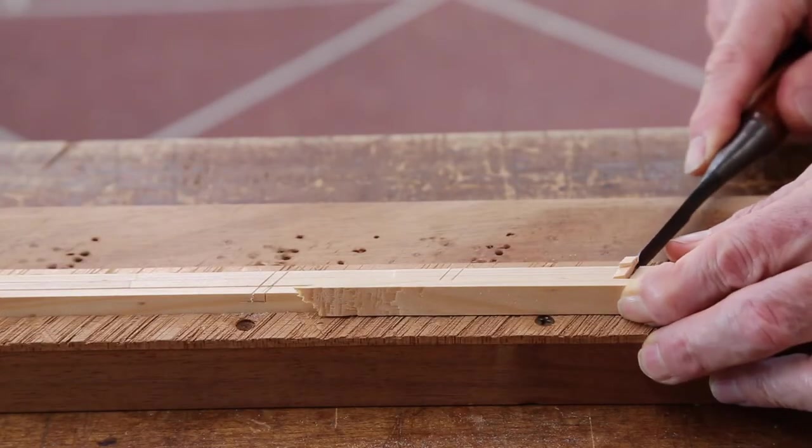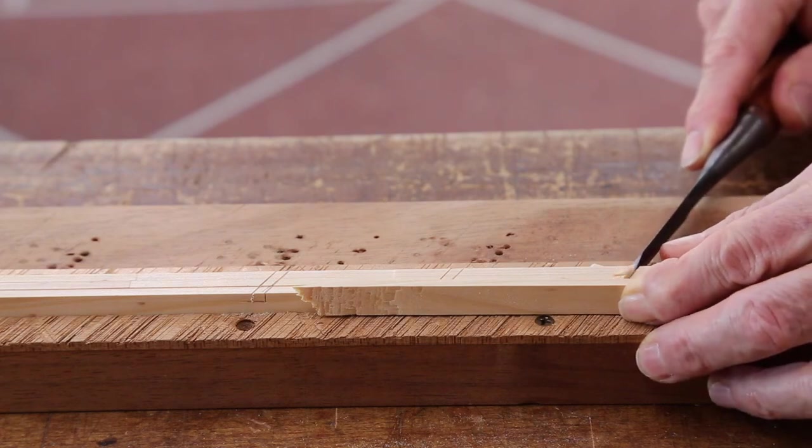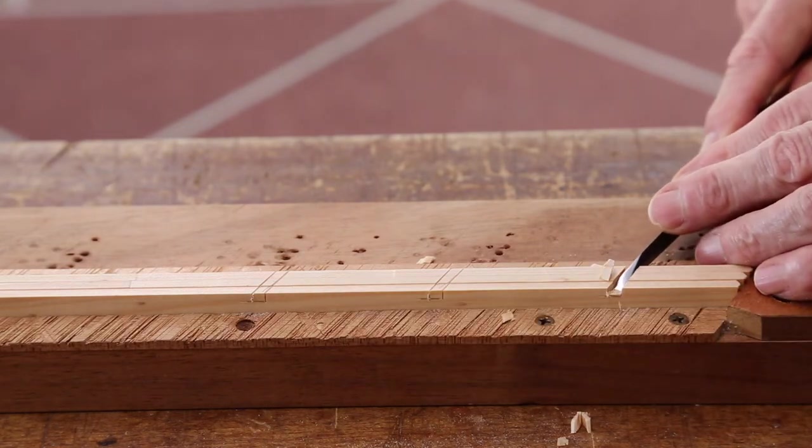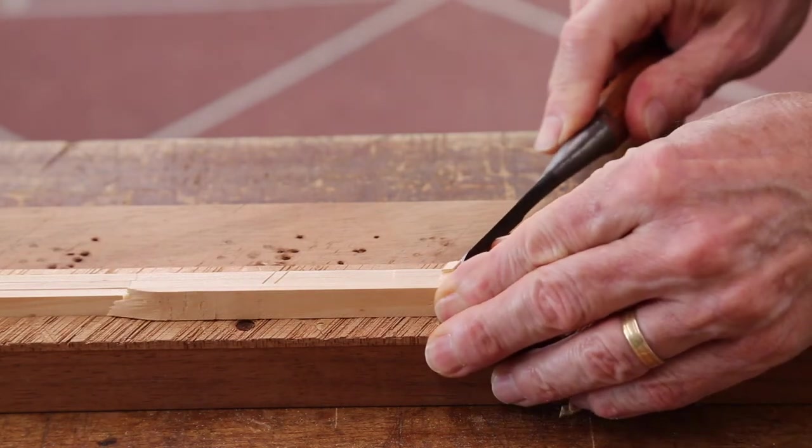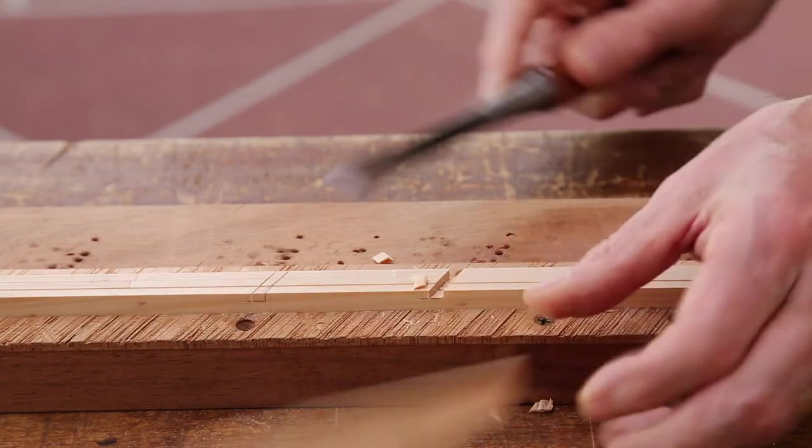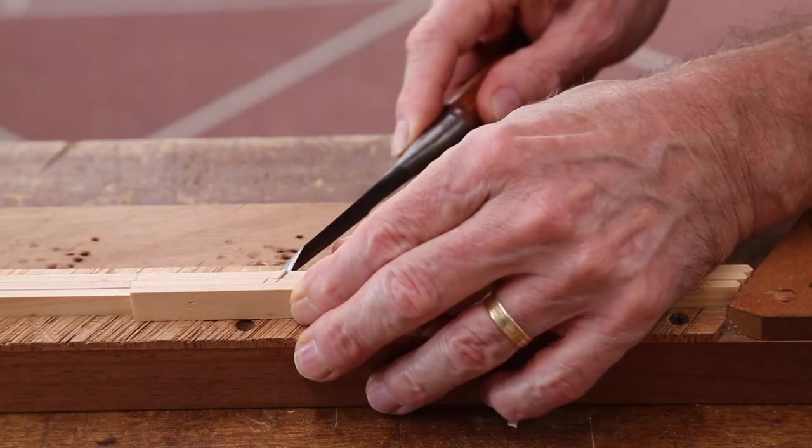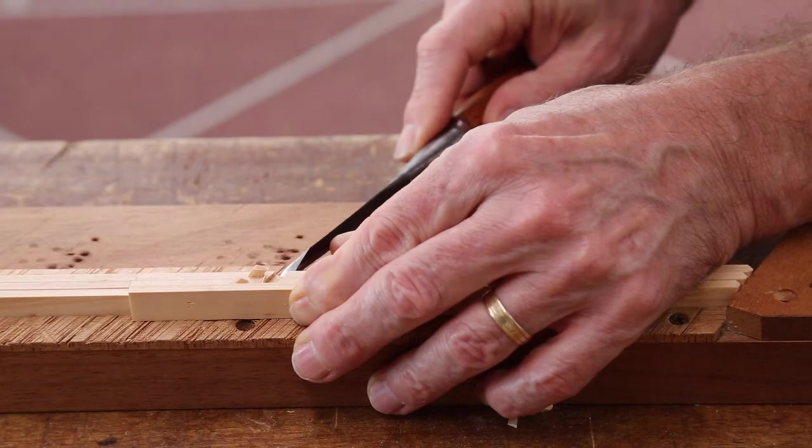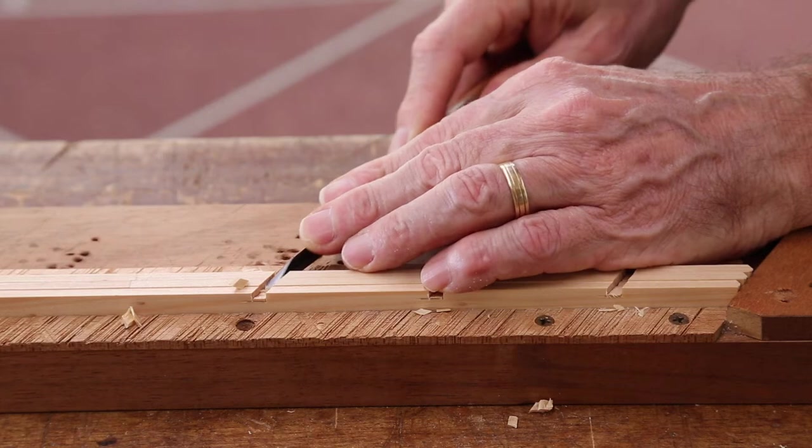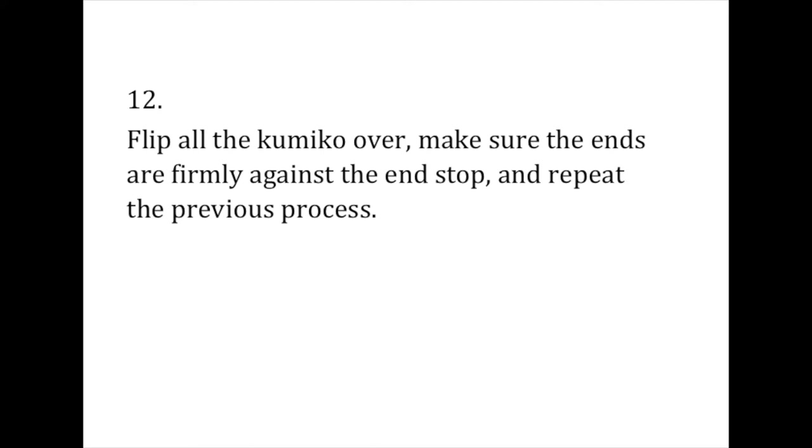When removing the waste for these joints, you can use a piece of scrap kumiko as a backing support to help prevent any damage to the joint from the chisel. This is more important when working with much thinner kumiko, but here it just gives that extra bit of support. Now repeat that exact same process.